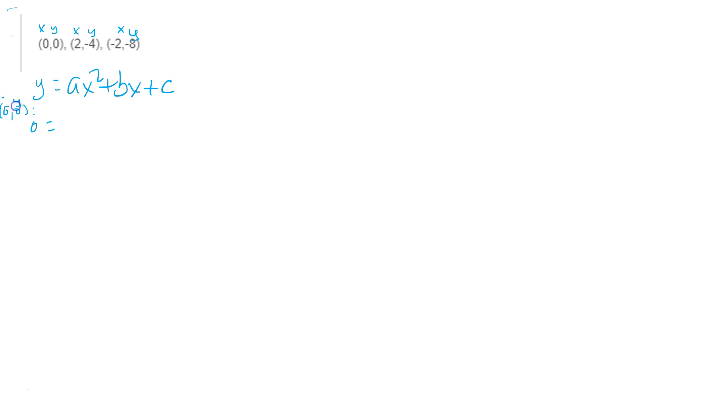Remember, this is your y and this is your x. So you put 0 equals y on that side, and then on the right side you write a times 0 squared plus b times 0 plus c. From this equation you can conclude immediately that 0 equals c. All of these terms here vanish because you're multiplying by 0.